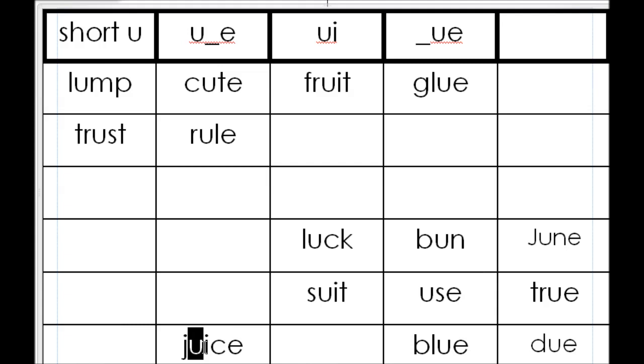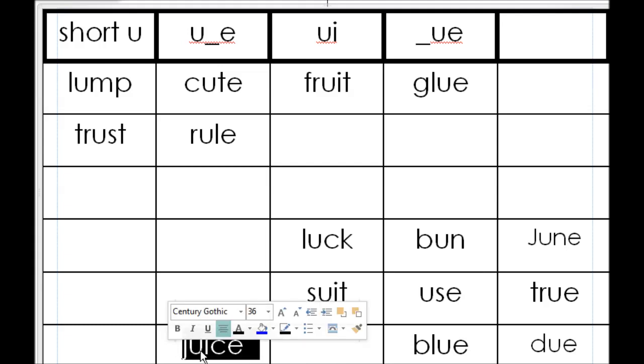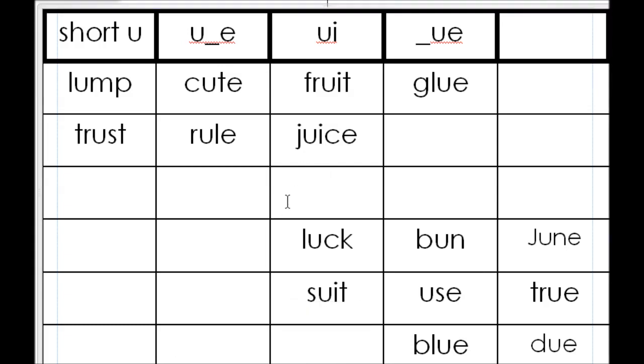So in juice, you actually have the UI word rule, and it is first vowel does the talking, second vowel does the walking.